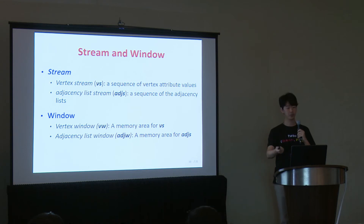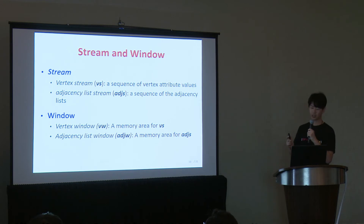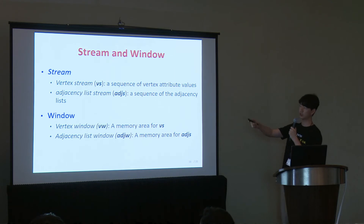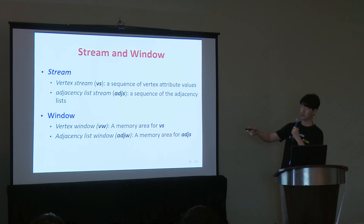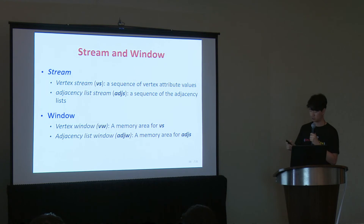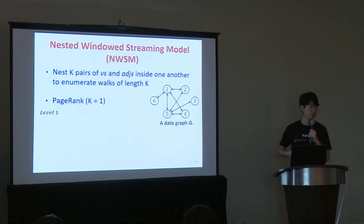I introduce a concept of stream as a data model in our processing model. Given a sequence of vertices, we consider the corresponding sequence of vertex attribute values like PageRank values as a vertex stream VS, and the adjacency list sequence as an adjacency list stream RGS. We can define vertex and adjacency list windows as memory areas for VS and RGS respectively. Our new processing model is called the nested window streaming model.